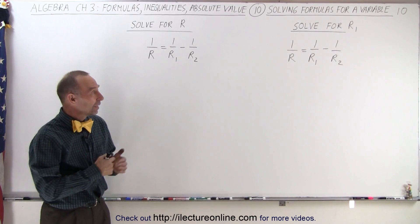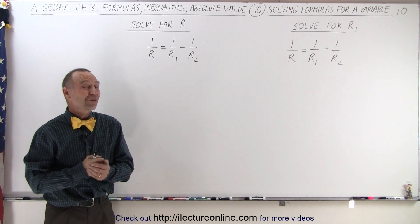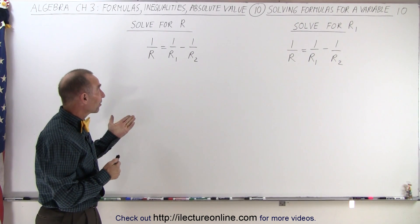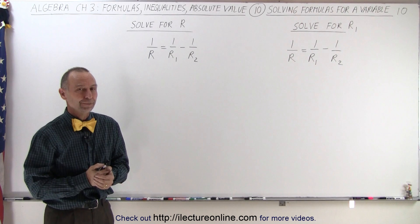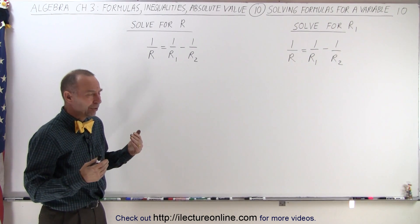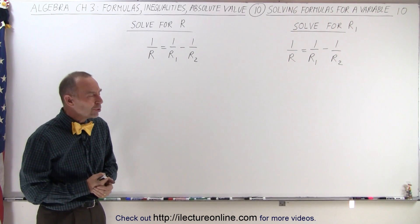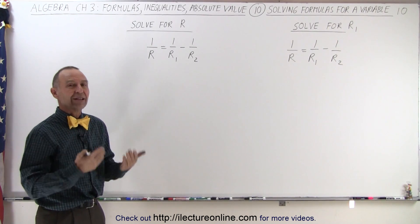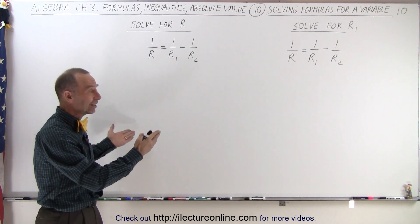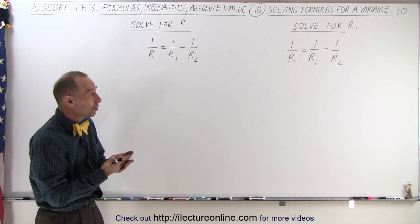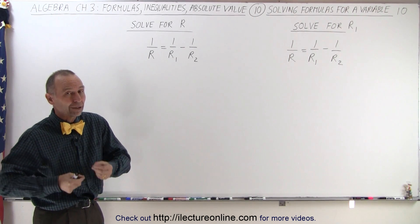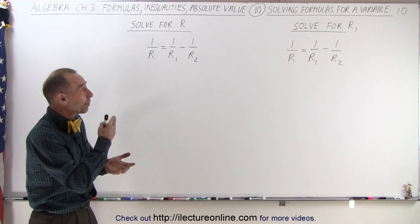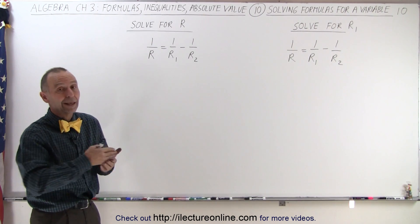Welcome to our lecture online. Here we have two interesting equations. On the right side we're trying to solve for R1, and on the left side we're trying to solve for R. There are different techniques we could use, but it makes sense to go ahead in our standard fashion. We have fractions, so let's get rid of them by multiplying both sides by the lowest common denominator, which is the product of R, R1, and R2.